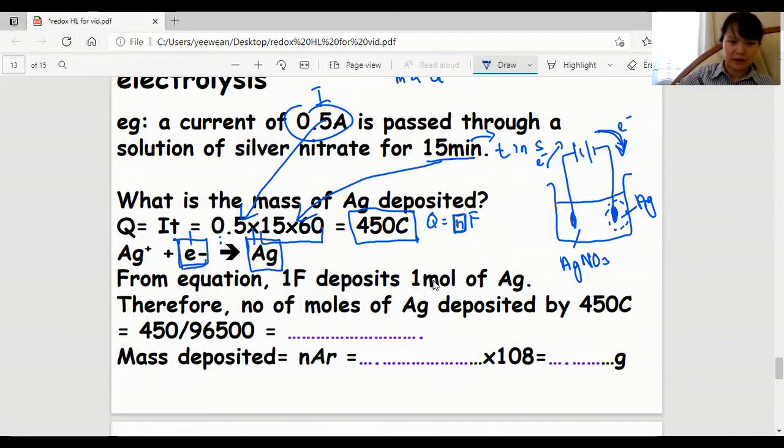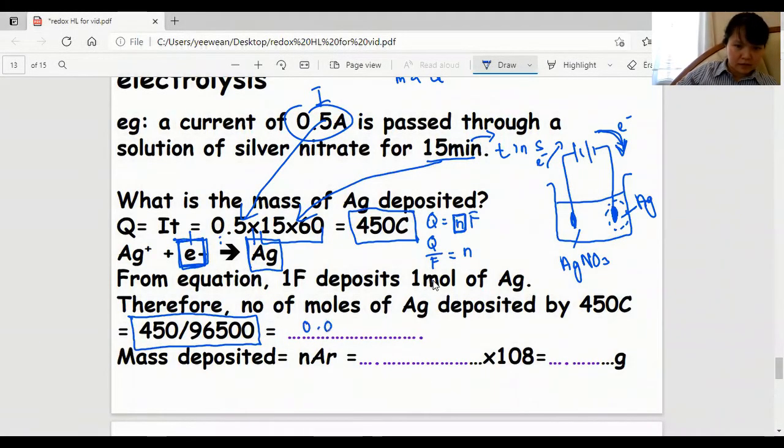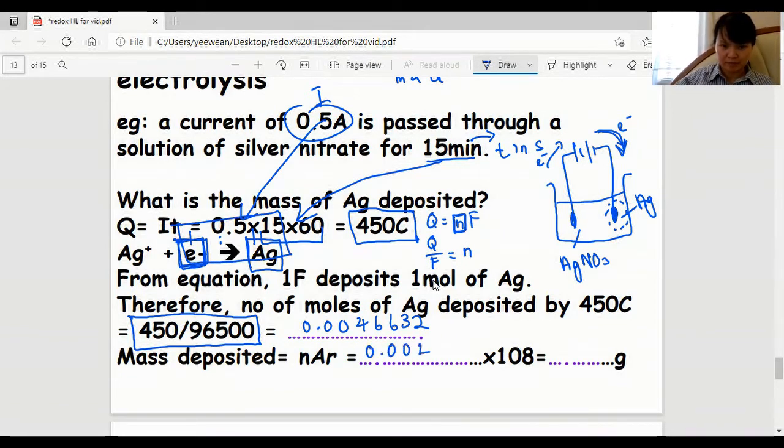This N is the mole of electrons, not the mole of silver formed. Q over F equals that mole of electrons, 0.004663. Because the electrons to silver ratio is one to one, I also have that number of moles of silver. Multiplying by its MR of 107.87 from the data booklet, my answer is 0.503 in three significant figures.